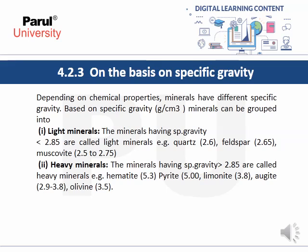On the basis of specific gravity, minerals have different specific gravity depending on chemical properties. Minerals with specific gravity less than 2.85 are called light minerals — for example, quartz, feldspar, and muscovite. Minerals with specific gravity greater than 2.85 are called heavy minerals — for example, hematite, pyrite, limonite, augite, and olivine.